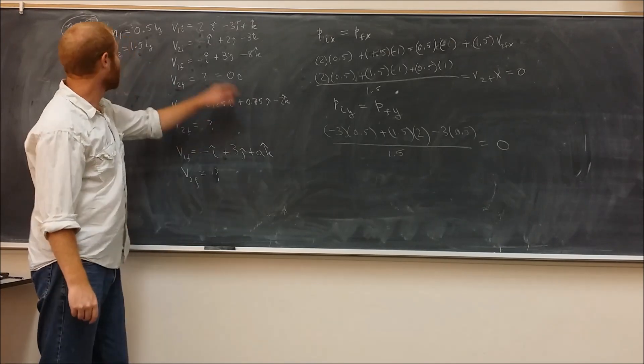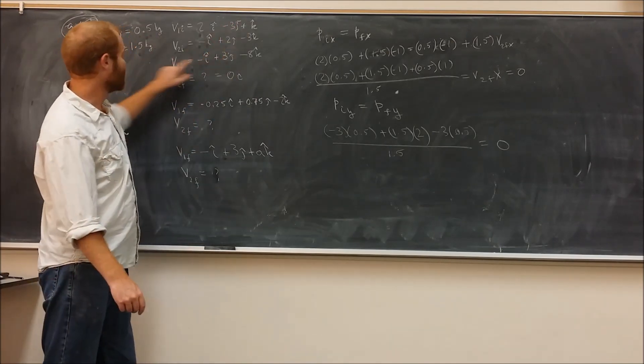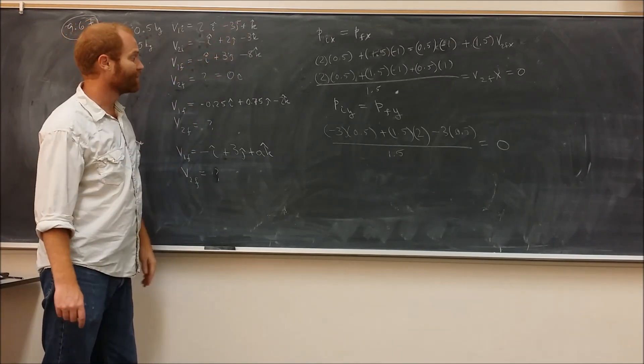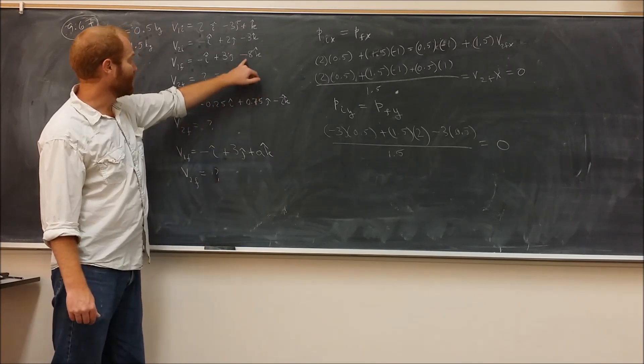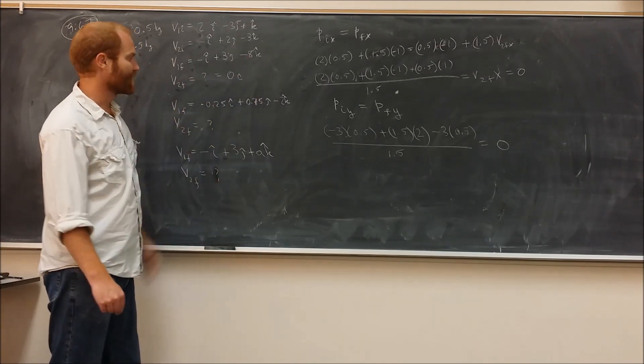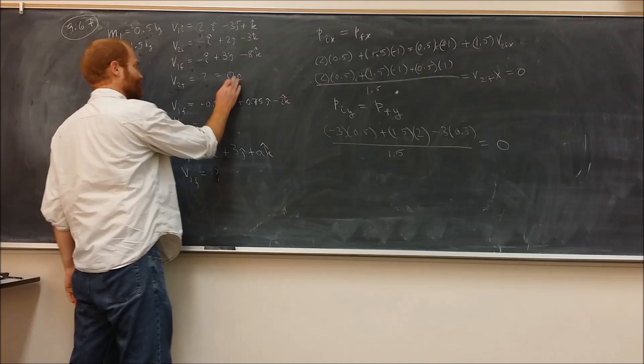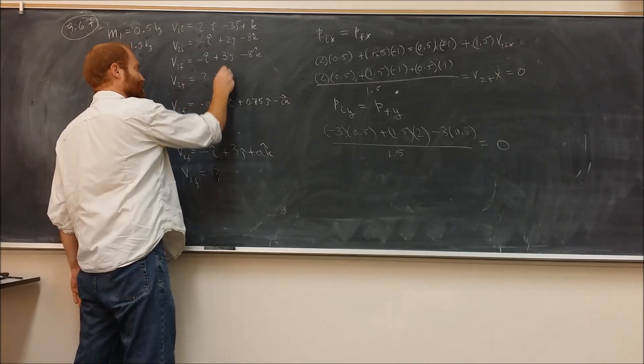You do it again for, you'll have 0.5 times 1 minus 3 times 0.5 equals this. You add this to the other side, you get a similar expression. So you're going to get actually just 0, 0, and 0 here. So V2F is 0.